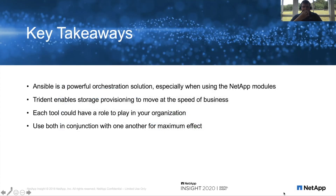The key takeaways here: Ansible is at the core of what we do with our Cloud One program. It's a powerful orchestration solution, especially when you use the NetApp modules. Trident allows us to deliver storage to containerized applications at the speed of business. We've found that both tools work best in conjunction with each other for maximum effect, and we use each tool to its fullest extent.